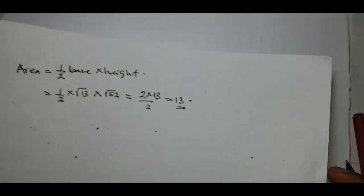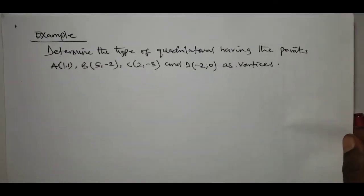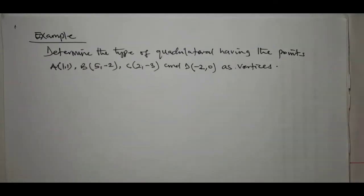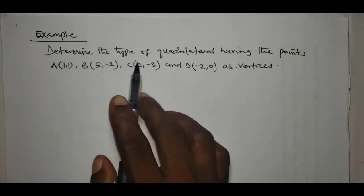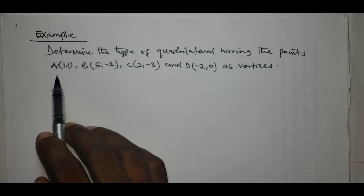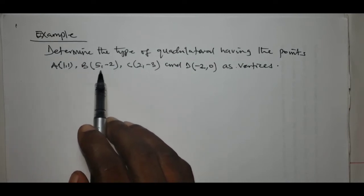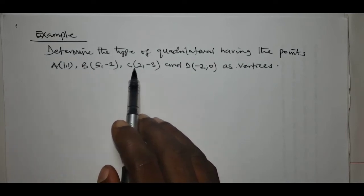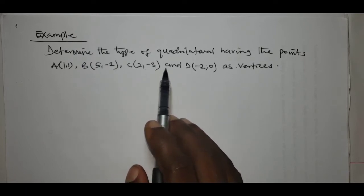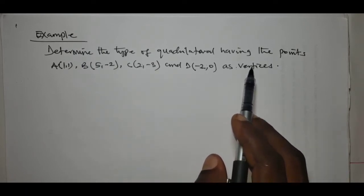Let us take one more example for today. The example says: determine the type of quadrilateral having the points A(1,1), B(5,-2), C(2,-3), and D(-2, 0) as vertices.